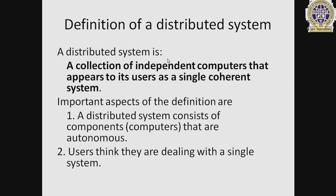Important aspects of the definition: Number one, a distributed system consists of components that are autonomous. Number two, users think they are dealing with a single system. It means a distributed system looks like a single system but works with multiple computers.